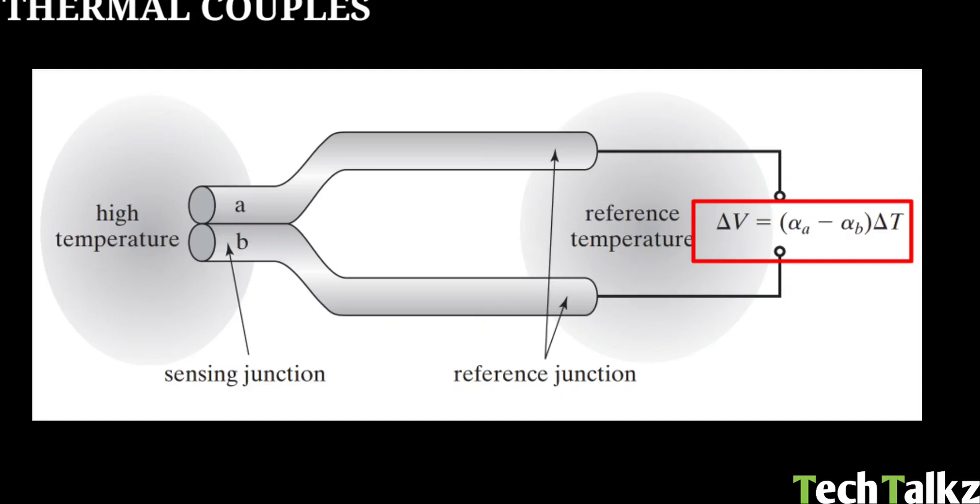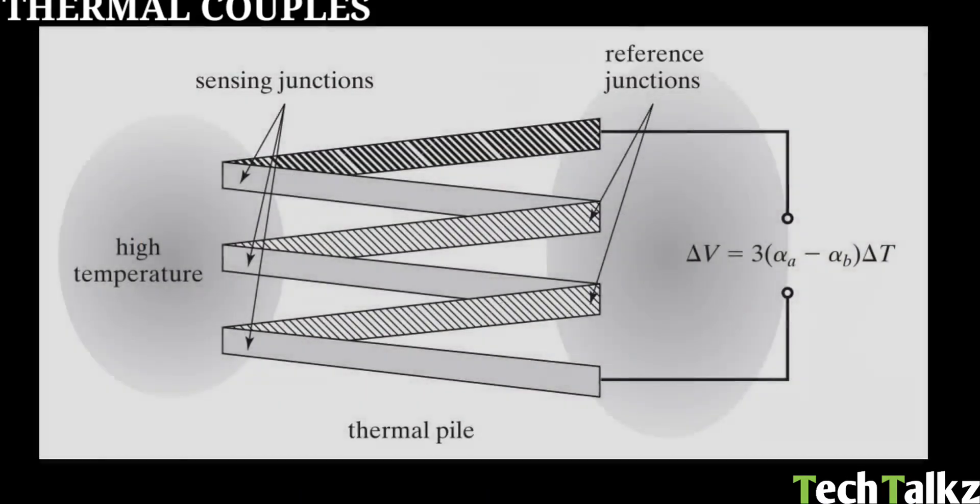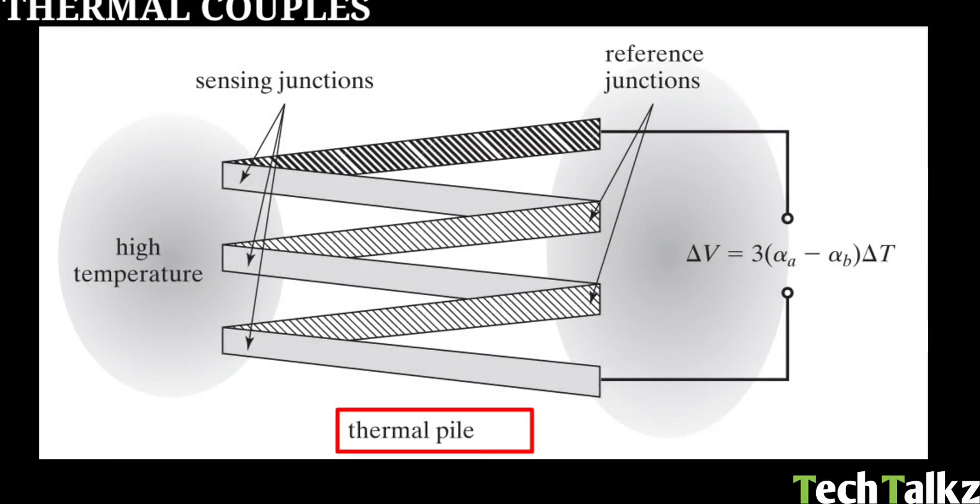Commonly, thermal couples are used in thermal sensing. If you connect these thermal couples in series, that is a thermopile. You can connect numerous thermal couples. This figure shows a thermopile with three thermal couples. There is a hot junction and a cold junction.